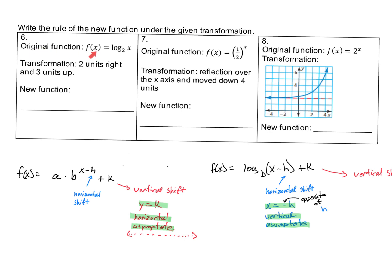Problem 6: the original function f(x) = log₂(x). It says we have a transformation of 2 units right and 3 units up. Let's consider the log function and the transformation. Remember, log base b of (x - h). Inside the parentheses, x - h is the horizontal shift.